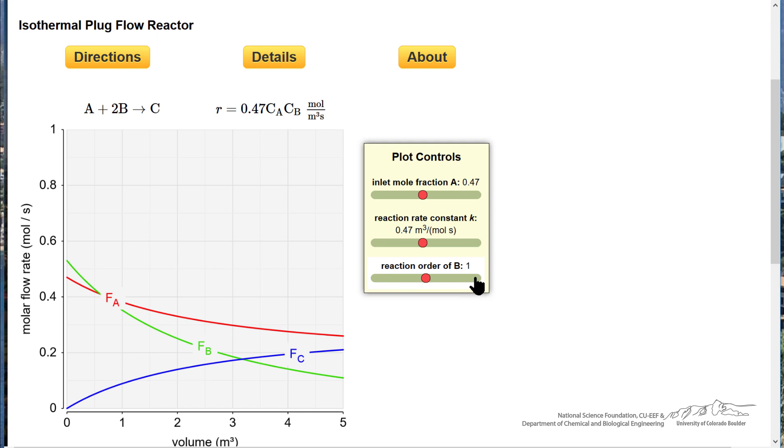And then if I go to second order, as the concentration of B decreases, then the rate decreases faster because it's second order in B, and so we don't have as big a drop in the molar flow rates through the reactor.